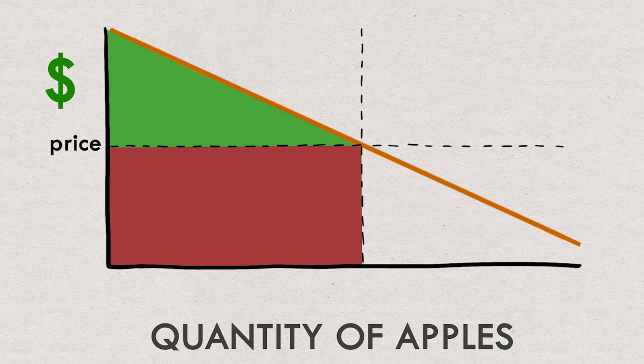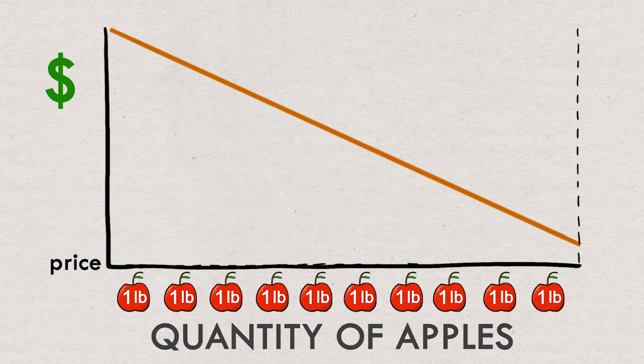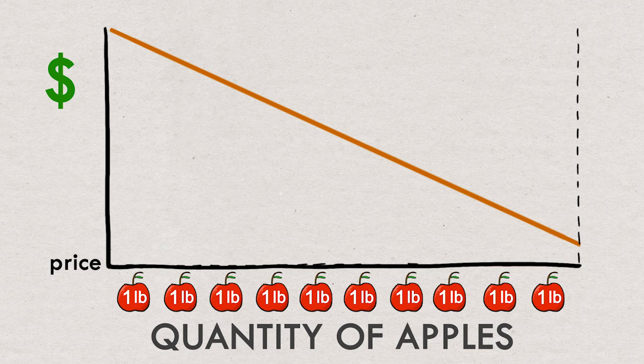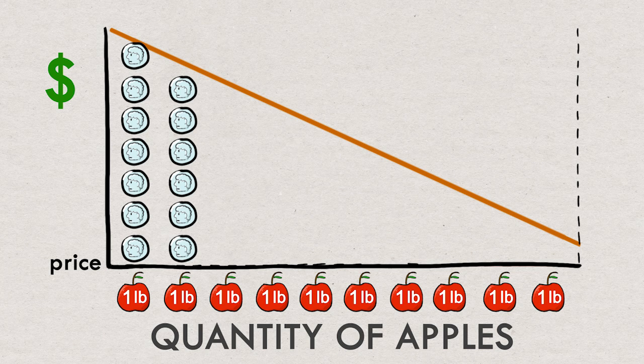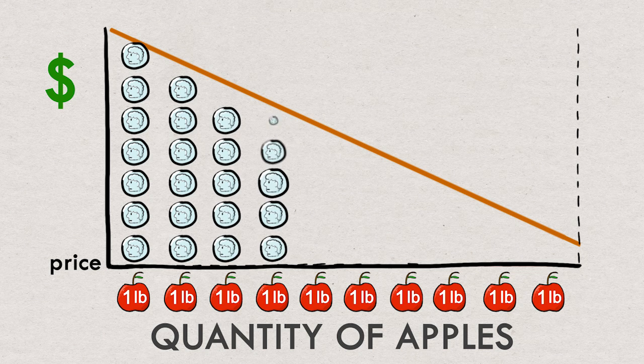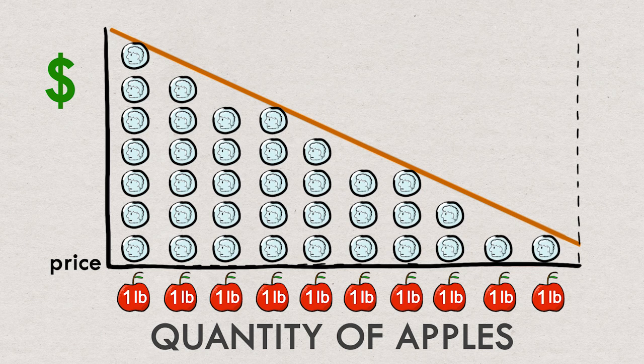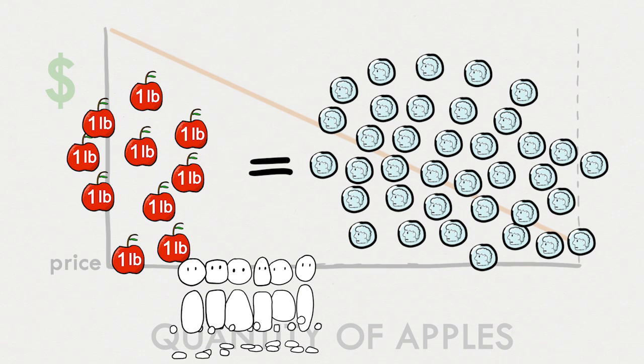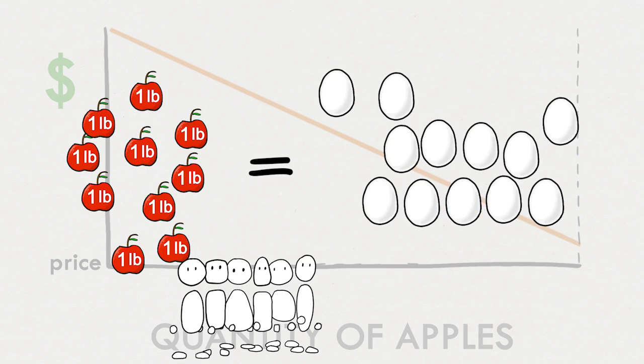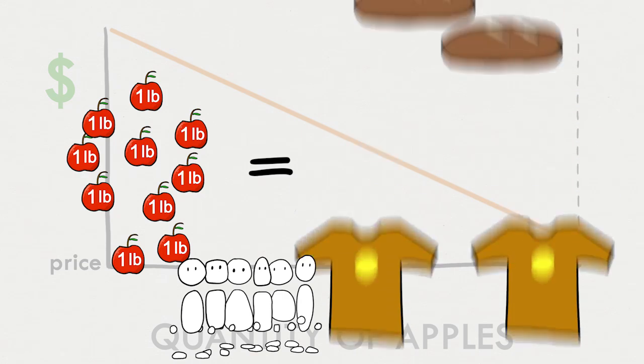Okay let's say apples were completely free magically delivered straight to your house. The most the first pound of apples would have traded for on the market would have been this. The next pound the most it could trade for is this. Maybe it's the same person trading or maybe it's somebody else. Doesn't really matter. If we add up the maximum willingness to pay for all the traded pounds of apples, this is essentially the equivalent value of the apples traded on the market in terms of another good, in this case money. But this is the exact same as saying that to all these people these apples are worth the same as you know whatever number of eggs or whatever number of t-shirts or whatever number of loaves of bread.